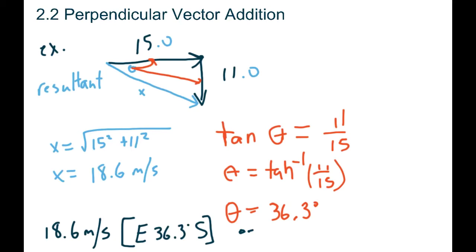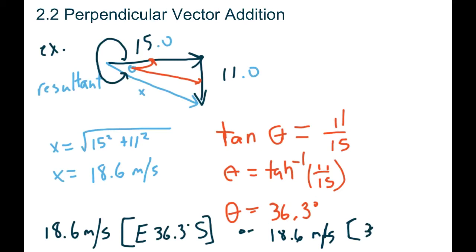Or if you wanted to use the math way, it would be 18.6 meters per second. Remember, the angle is measured from the zero line all the way around, so you'd have 360 minus 36, which gives us 323.7 - rounded to 3 sig digs that's 324 degrees. Either of those two answers would be acceptable.